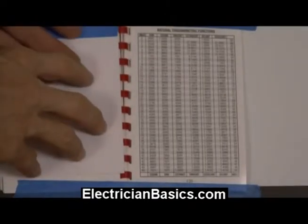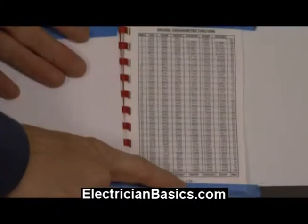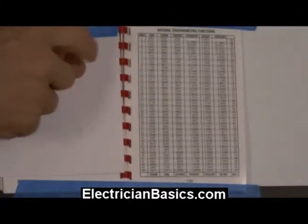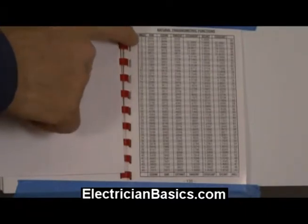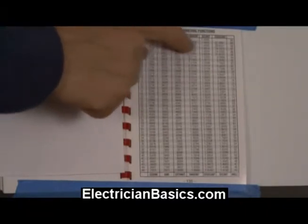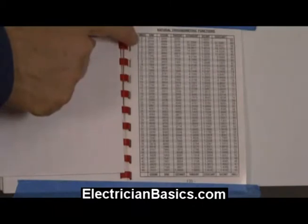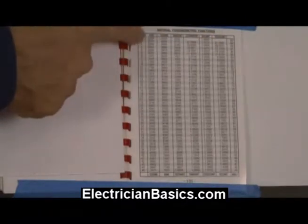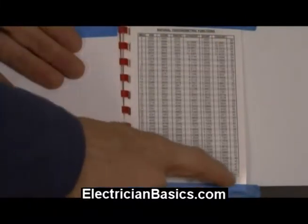So here we are at page 135, and it says natural trigonometric functions. It starts out here at the top. It's got several functions listed here. It says angle on this side, and it has 0, and over here it has 91 and 89. And as we go down, it has 45 and 45.